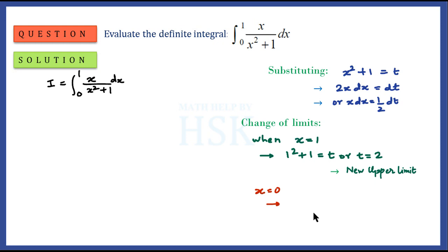Now when x is equal to 0, then the value of t would be equal to 0 + 1, or t would be equal to 1. So this would be the value of the new lower limit. I'm going to replace the lower limit 0 for the independent variable x with the new lower limit for t that is equal to 1.